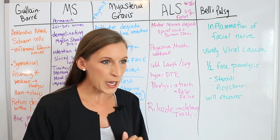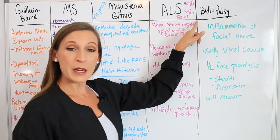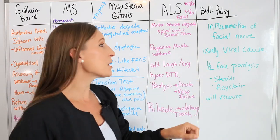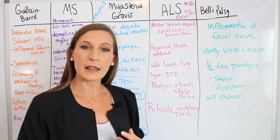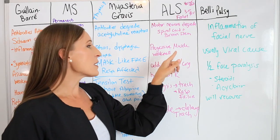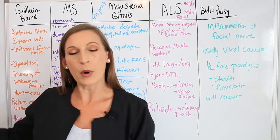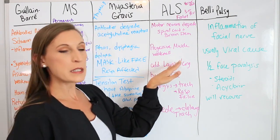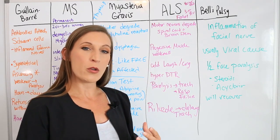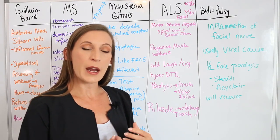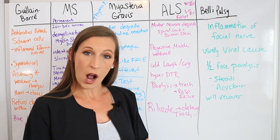Next is ALS — amyotrophic lateral sclerosis, also known as Lou Gehrig's disease. It mainly affects people over 40 years old and is fatal, with three to five years to death after onset of symptoms. It affects and degrades the motor neurons in the spinal cord and brainstem. It causes progressive muscle weakness — not bilateral like Guillain-Barré, but random progressive muscle weakness that eventually leads to paralysis.